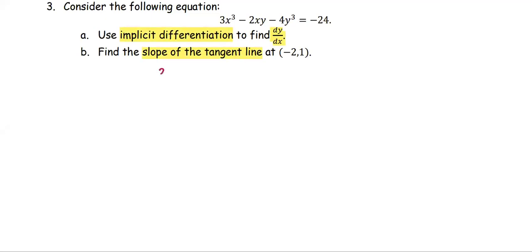For the implicit function 3x³ minus 2xy minus 4y³ equals negative 24, we're going to start using the implicit differentiation process to find dy/dx.